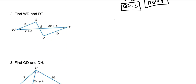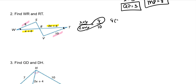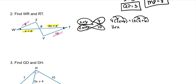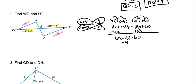The angles are marked as congruent, which means the corresponding sides are proportional. Setting up the proportion: X plus 6 over 2X plus 6 equals 8 over 10. Cross-multiplying gives 8 times (2X plus 6) equals 10 times (X plus 6). Distributing: 16X plus 48 equals 10X plus 60. Subtracting 10X from both sides gives 6X plus 48 equals 60. Subtracting 48 gives 6X equals 12, so dividing by 6 gives X equals 2.